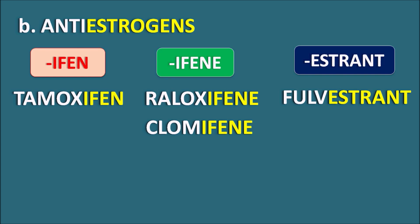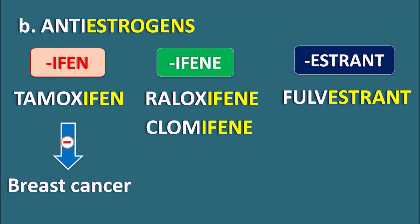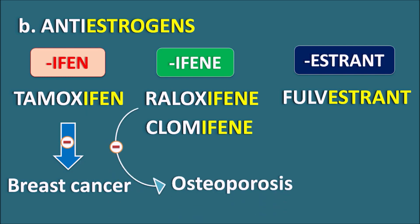Tamoxifen acts as an anti-estrogen by inhibiting the action of estrogen on breast tissue, so it is used in the treatment of breast cancer in both premenopausal and postmenopausal women by directly blocking estrogen receptors. Raloxifene has antagonistic activity on estrogen but promotes estrogenic actions on bones, so it inhibits osteoporosis. Clomiphene increases estrogenic activity in anovulatory women, thereby stimulating ovulation. Fulvestrant is an anti-estrogen used in the treatment of breast cancer.